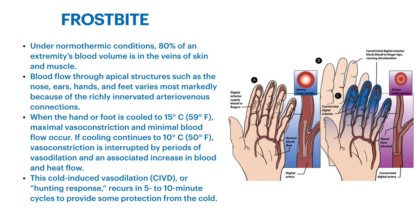Let's talk about the pathophysiology of frostbite. Under normal thermal conditions, 80% of an extremity's blood volume is in the veins of the skin and musculature — not the arteries or arterioles, but the venules and that side of the capillary system. Blood flow through typical apical structures such as nose, ears, hands, and feet varies most markedly because of the richly innervated arteriovenous connections. Those are what predispose these extremities to the most predisposition to frostbite — they freeze the earliest and have the most complex deep freezing issues.